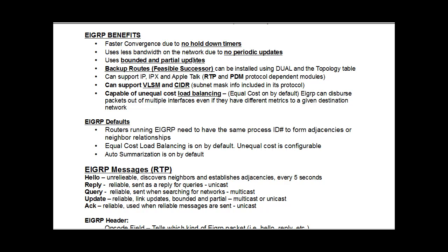EIGRP uses less bandwidth on the network due to not having periodic updates, like RIP sending out its whole routing table every 30 seconds. It has bounded and partial updates. It also has backup routes, called feasible successor routes, which can be installed using DUAL and the topology table. If a best route or successor route goes down, EIGRP is able to instantly install a feasible successor or backup route from the topology table.